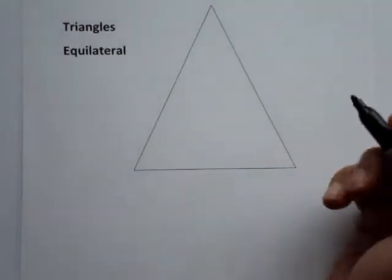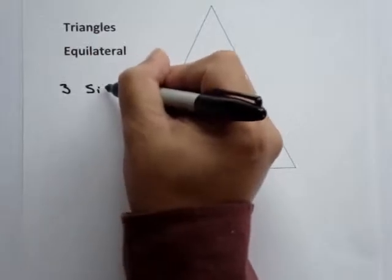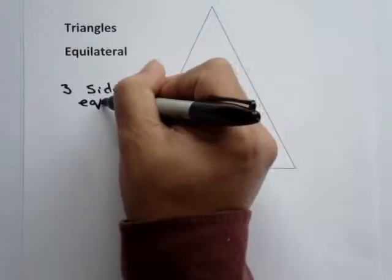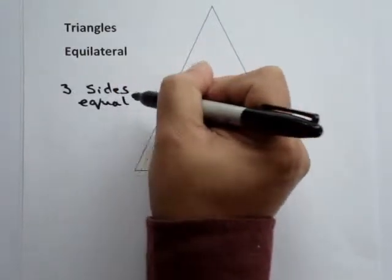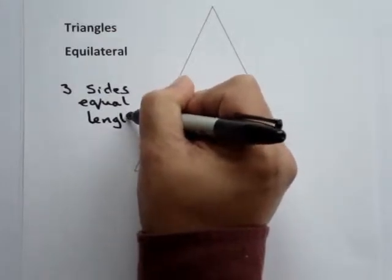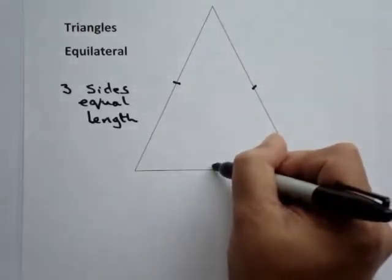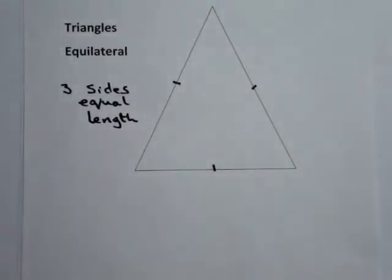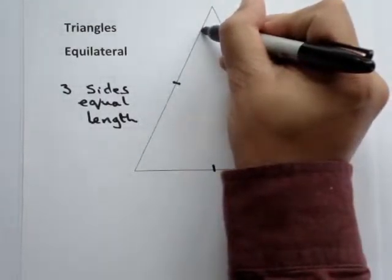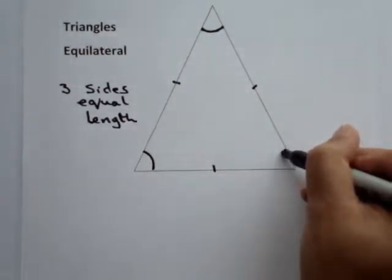An equilateral triangle has three sides equal in length. So this side, this side, and this side will be equal in length. Also, the three angles will be equal, so we can signify that by using arcs at each of the three vertices.